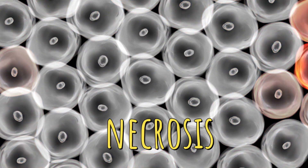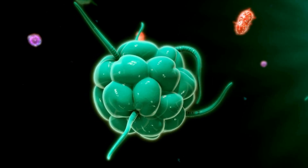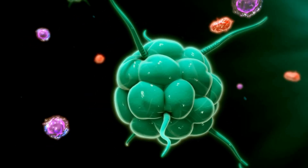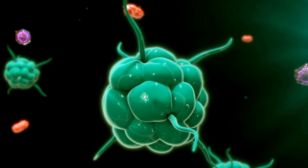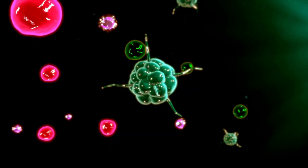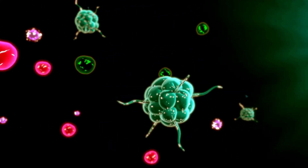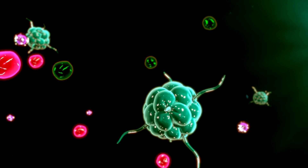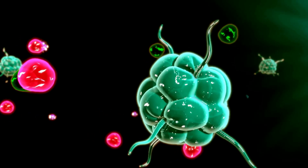Number seven: inflammatory response. The cell death triggers an inflammatory response as the body's immune system tries to remove the dead tissue. This process further contributes to the damage and can weaken the heart muscle.